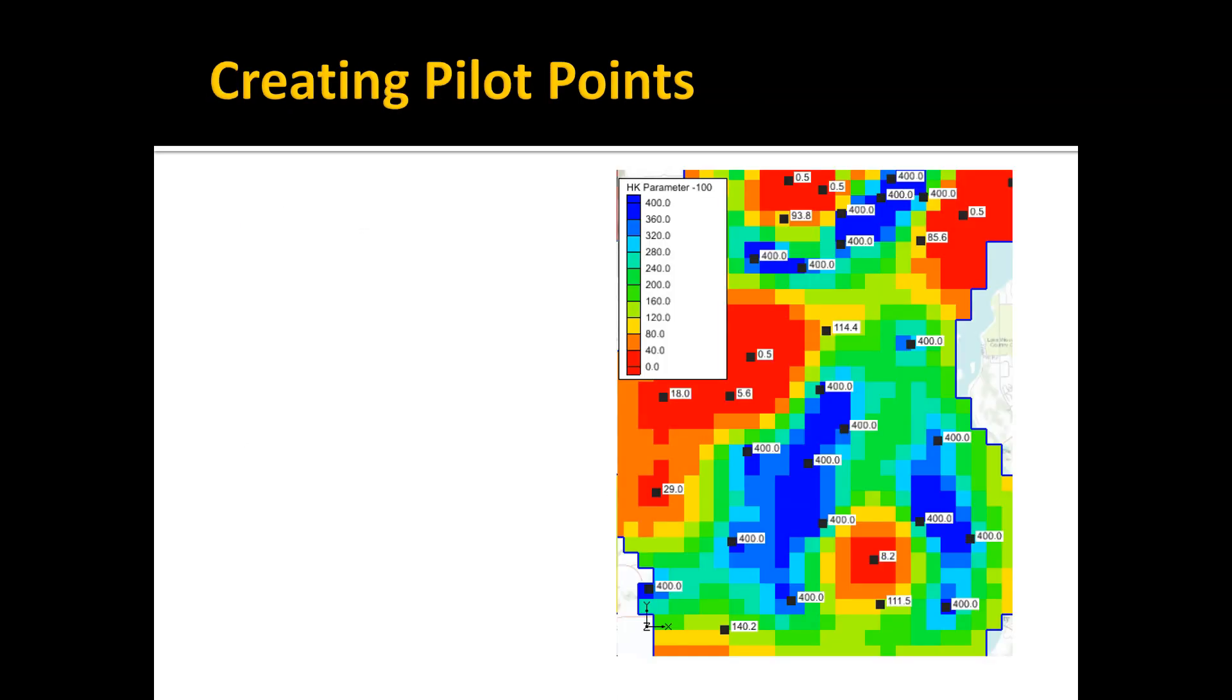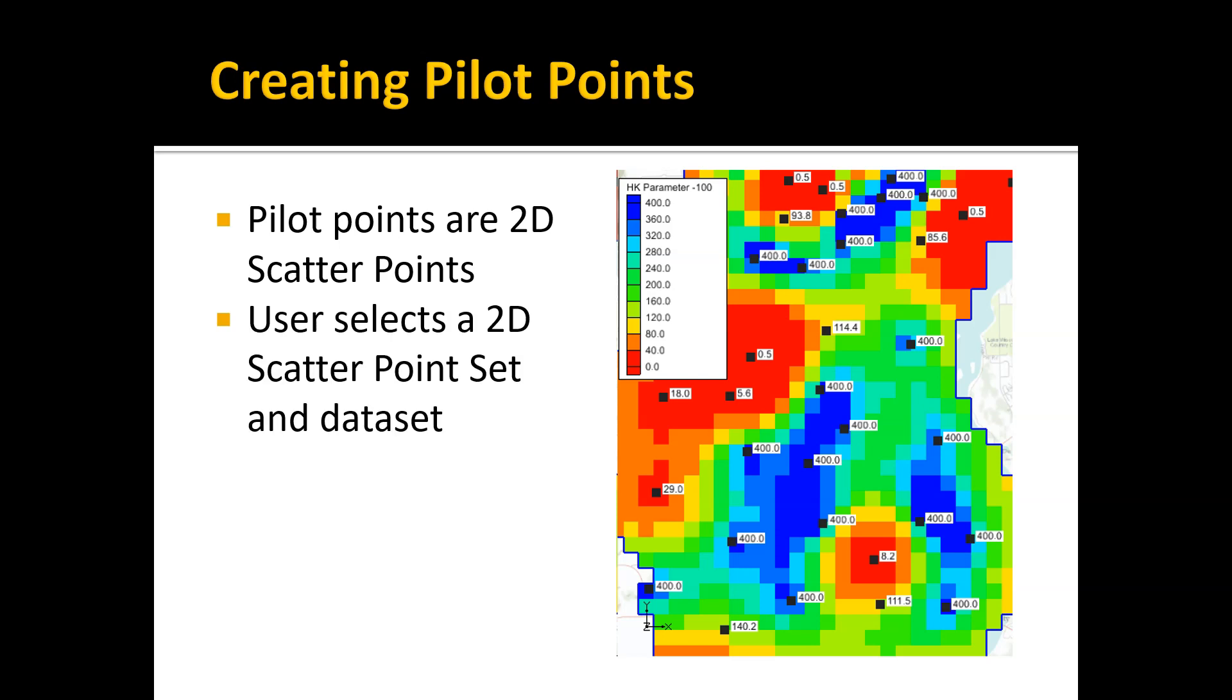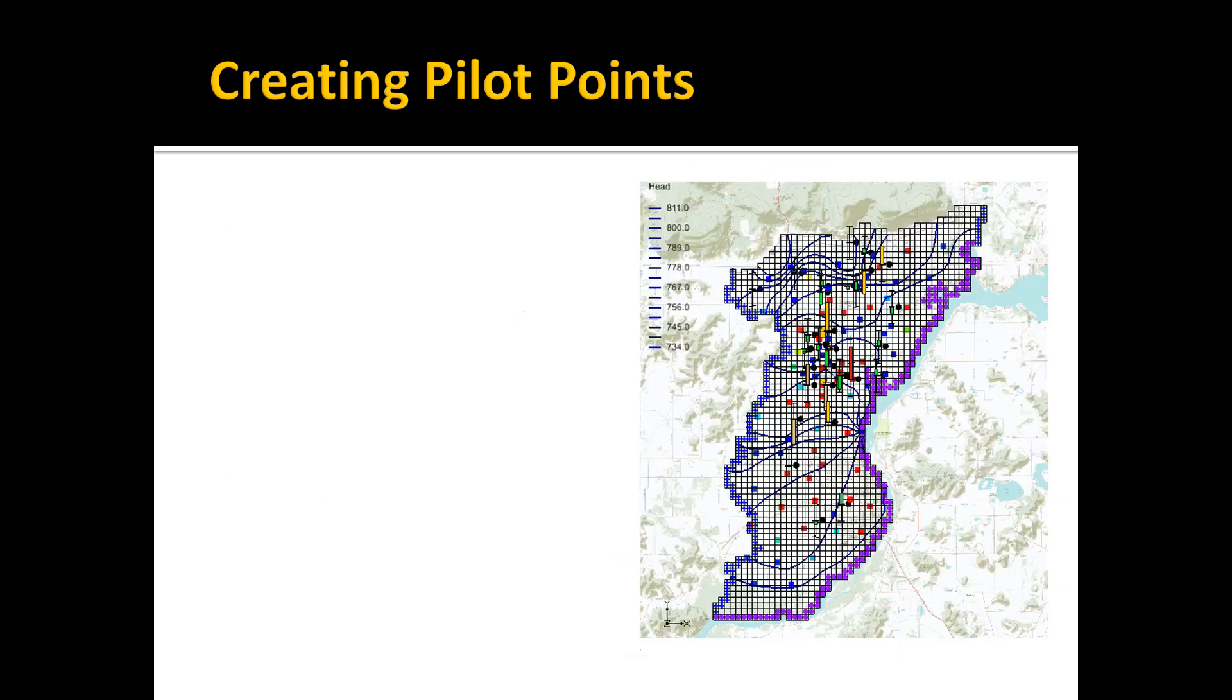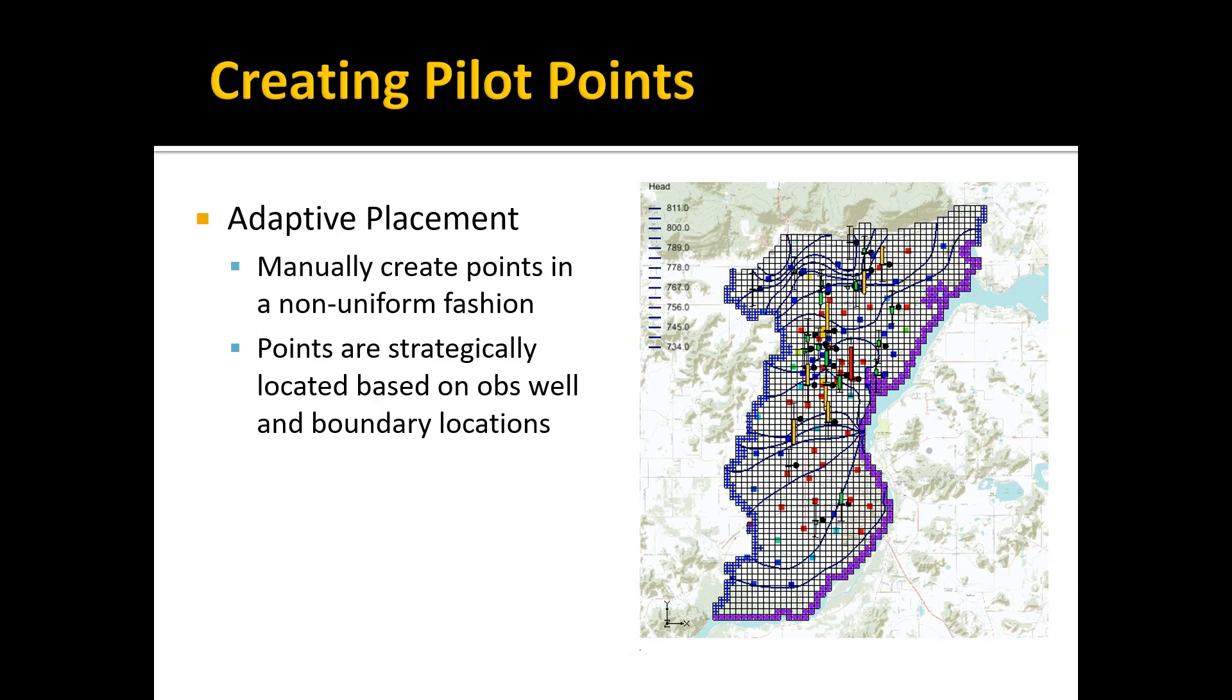How do you go about creating pilot points? The pilot points in GMS are basically a set of 2D scatter points. You have to create a 2D scatter point set and then have a data set associated with that which has the starting values of, say, your hydraulic conductivity. The values at the points are interpolated to the corresponding MODFLOW array using the spatial interpolation process.